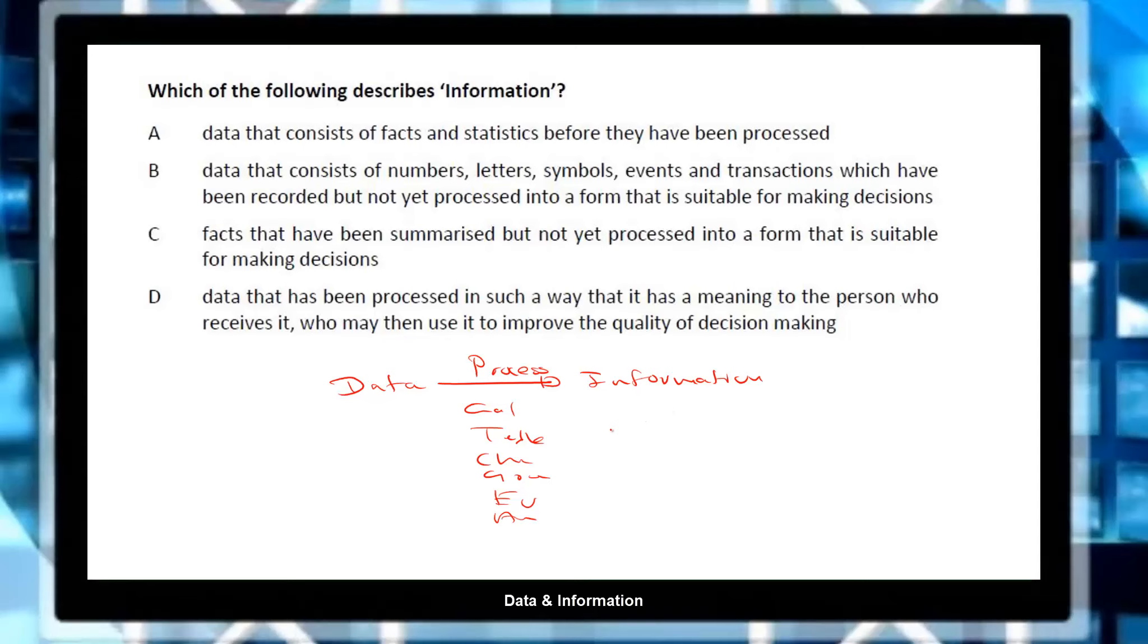So let's go through the statements that they have given. Option A: data that consists of facts and statistics before they have been processed. Option B: data that consists of numbers, letters, symbols, events and transactions which have been recorded but not yet processed. So information is something once you process it.